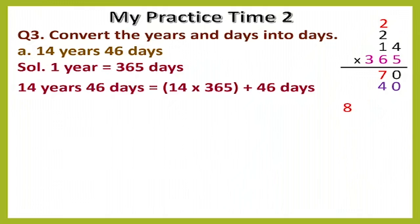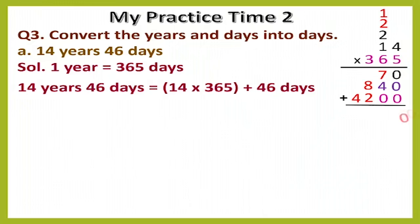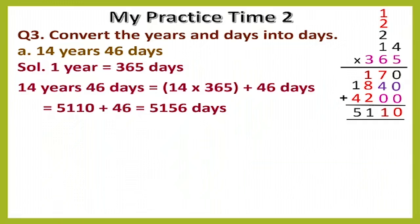Now put 2 zeros, then multiply 3 by 14: 3 fours are 12, write 2 and carry 1; 3 ones are 3 plus 1 will be 4. After that, add all the numbers: 0+0+0=0; 7+4+0=11, write 1 carry 1; 1+8+2=11, write 1 carry 1; 1+4=5. So after multiplying we get 5110.